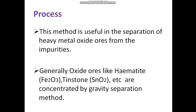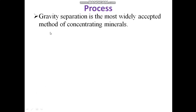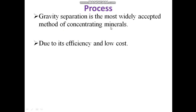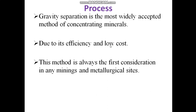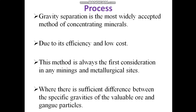Depending on the type of ore we want to process, we use different methods such as the froth flotation method, electromagnetic separation method, or the gravity method. Here we are taking hematite and tinstone as examples. Gravity separation is the most widely accepted method of concentrating minerals, used due to its efficiency and low cost, and is the first consideration in any mining and metallurgical site where there is sufficient difference between the specific gravities of the valuable ore and the gangue particles.